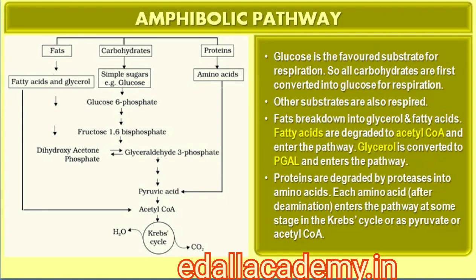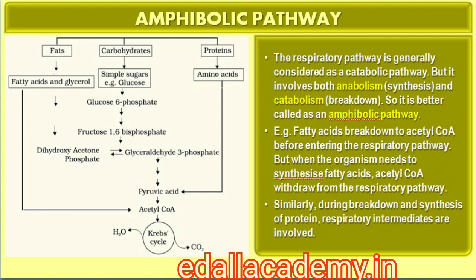14.6 Amphibolic Pathway. Glucose is the favored substrate for respiration. All carbohydrates are usually first converted into glucose before they are used for respiration. Other substrates can also be respired, but they do not enter the respiratory pathway at the first step. Fats would need to be broken down into glycerol and fatty acids first. If fatty acids were to be respired, they would first be degraded to acetyl-CoA and enter the pathway. Glycerol would enter the pathway after being converted to PGAL. Proteins would be degraded by proteases, and the individual amino acids, after deamination, would enter the pathway at some stage within the Krebs cycle or as pyruvate or acetyl-CoA.